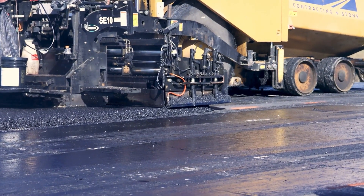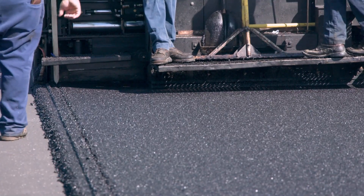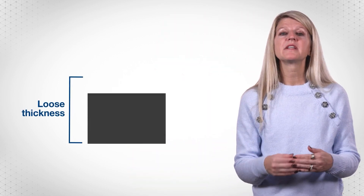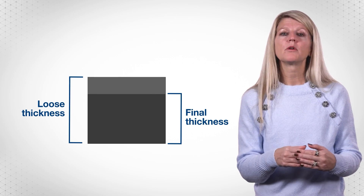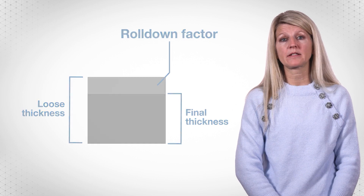Another important consideration is the roll-down factor. Understanding the roll-down factor is critical to setting the screed height to meet the final specified thickness of the project plan. A paving machine spreads the material on the ground and strikes it off evenly to provide a smooth surface and uniform mat thickness. The mat will get thinner as it is compacted, so the foreman must calculate the initial loose thickness based on the final thickness. The roll-down factor is how much thicker the loose material is than the compacted material.